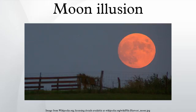A popular belief, stretching back at least to Aristotle in the 4th century BC, holds that the moon appears larger near the horizon due to a real magnification effect caused by the Earth's atmosphere. This is not true — although the atmosphere does change the perceived color of the moon, it does not magnify or enlarge it.